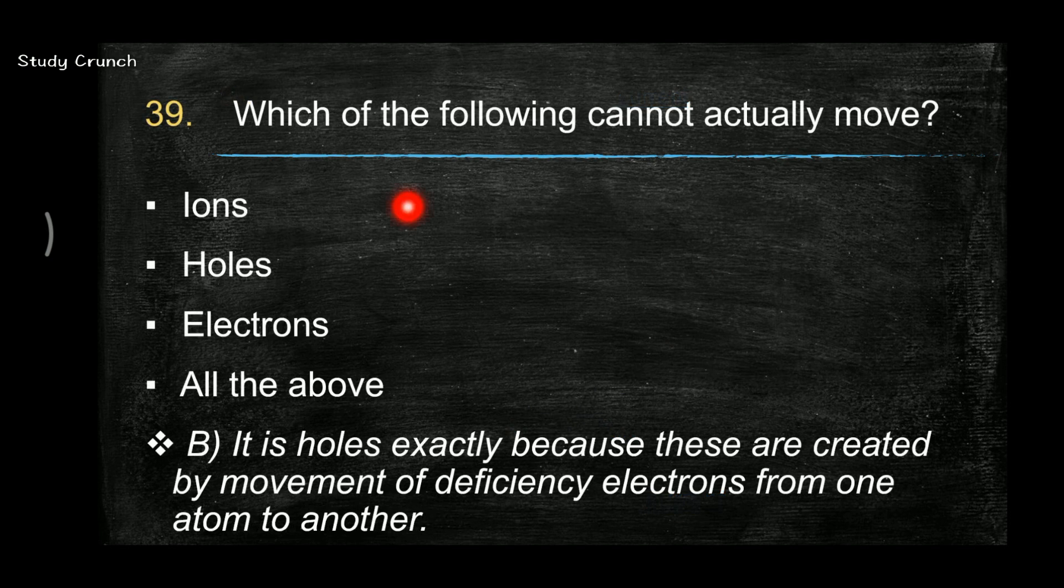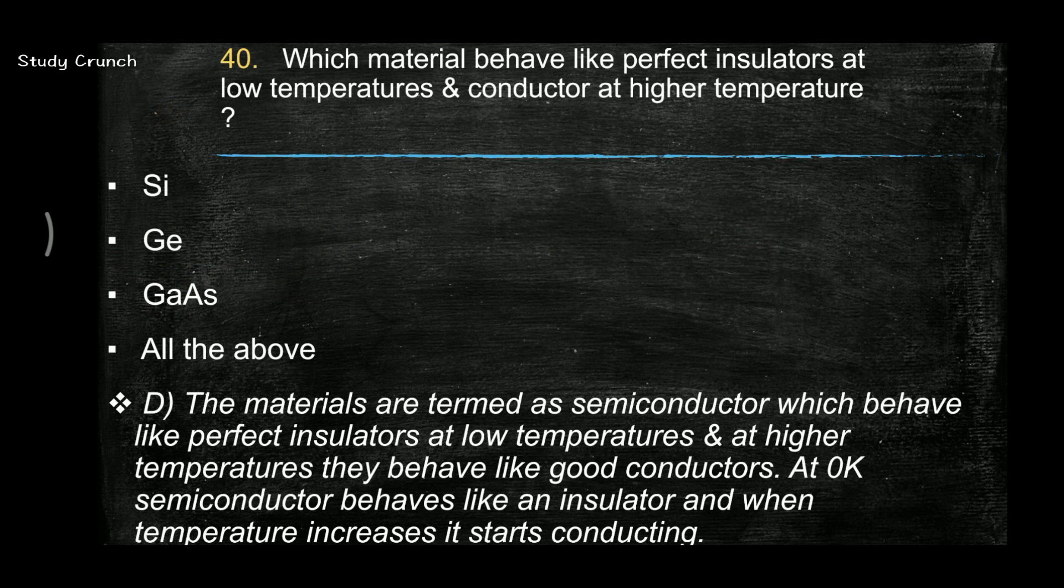Next, which of the following cannot actually move? The answer is holes, holes cannot move. Next, which of the material behave like perfect insulators at low temperature and conductors at high temperature? So the answer is D, that is silicon, germanium, and gallium arsenide. All the three act as perfect insulators at low temperature and conductors at high because it is a semiconductor which behaves like perfect insulators at low temperature and like good conductors at higher temperature.